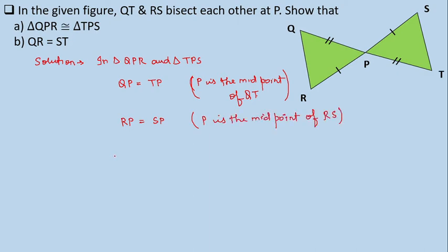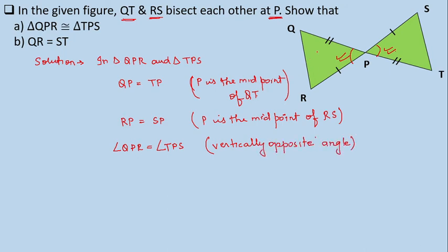The third equal condition is angle QPR equals angle TPS, as they form vertically opposite angles. Since QT and RS bisect each other at point P, when two straight lines intersect they form vertically opposite angles, which are always equal. So angle QPR equals angle TPS — reason: vertically opposite angles. This angle lies between the two sides of the triangle.